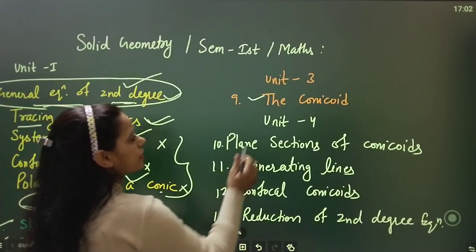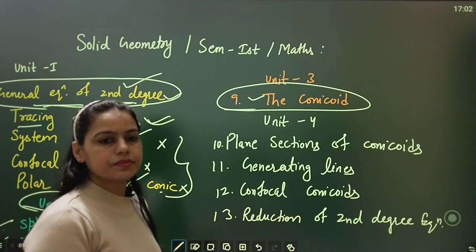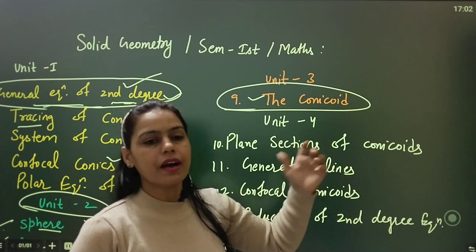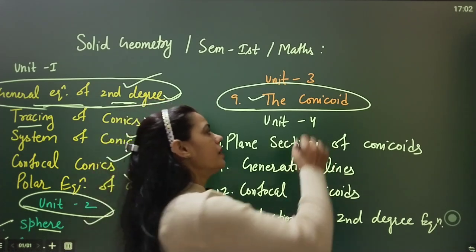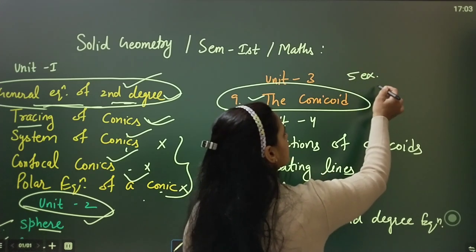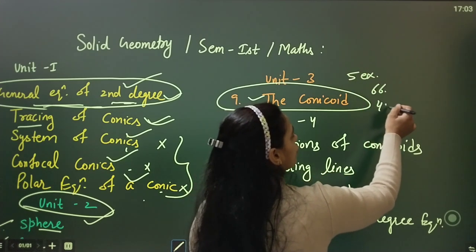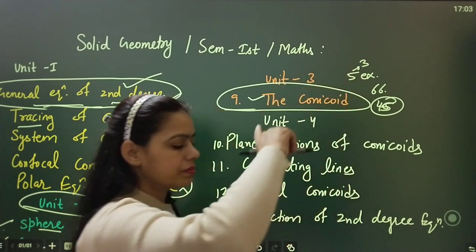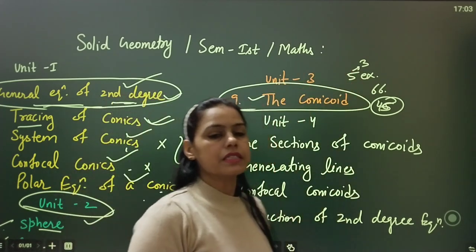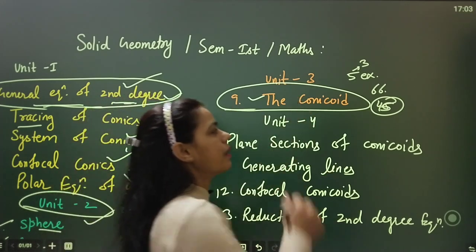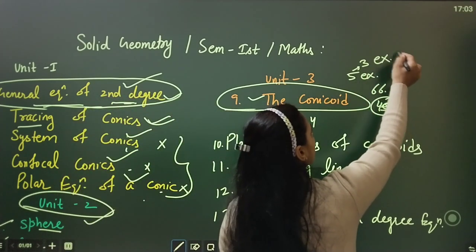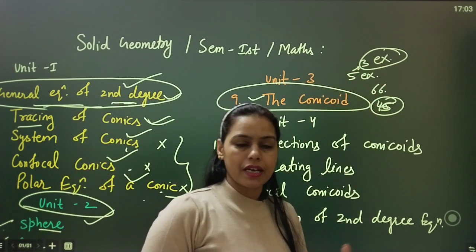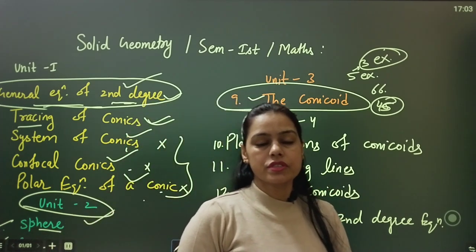In unit three, there is only one chapter — the conicoid. If you do half of this chapter, it will be sufficient. There are five exercises, or 66 pages. You should do it for 45 pages. In my opinion, we have kept this chapter in the application, so I think you should do three exercises here. You can see the important questions on the application — unit-wise important questions have been added. You can collect chapter-wise from there. All of these are free of cost for students.